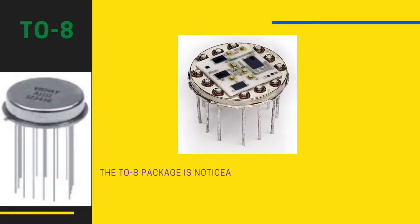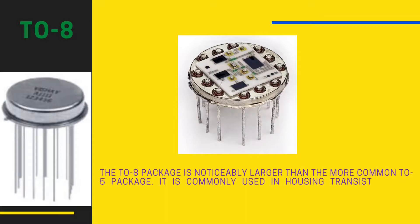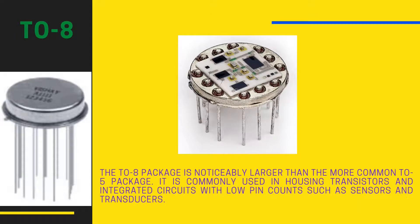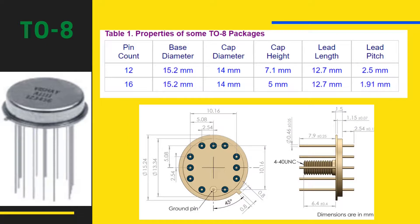The TO8 package is noticeably larger than the more common TO5 package. It is commonly used for housing transistors and integrated circuits with low pin counts, such as sensors and transducers. The typical TO8 metal can package has a base diameter of 15.24 mm, a cap diameter of 14 mm, and a cap height of 7.1 mm. The leads are arranged on a circle with a pitch of 2.5 mm. Some dimensions may change depending on package pin count, and most TO8 packages have pin counts ranging from 2 to 16 pins.